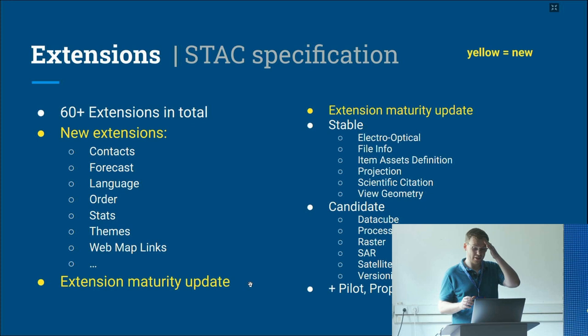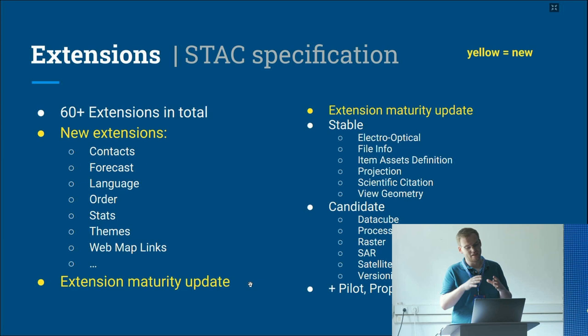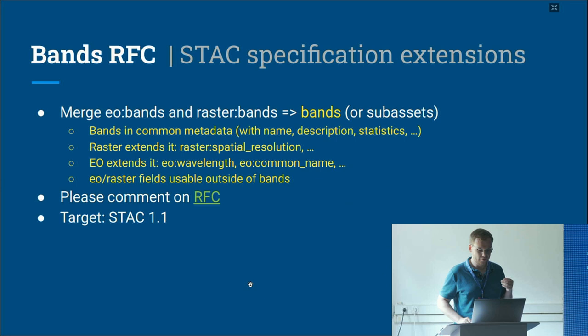Stable extensions right now are electro-optical for spectral imagery, file info for adding file sizes, item asset definition, projection, scientific citation, and view geometry. Candidate extensions are the data cube processing extension, raster, SAR, satellite, and version indicator. For raster, we'll see later that it may not reach stable right now due to other changes planned for the next version.